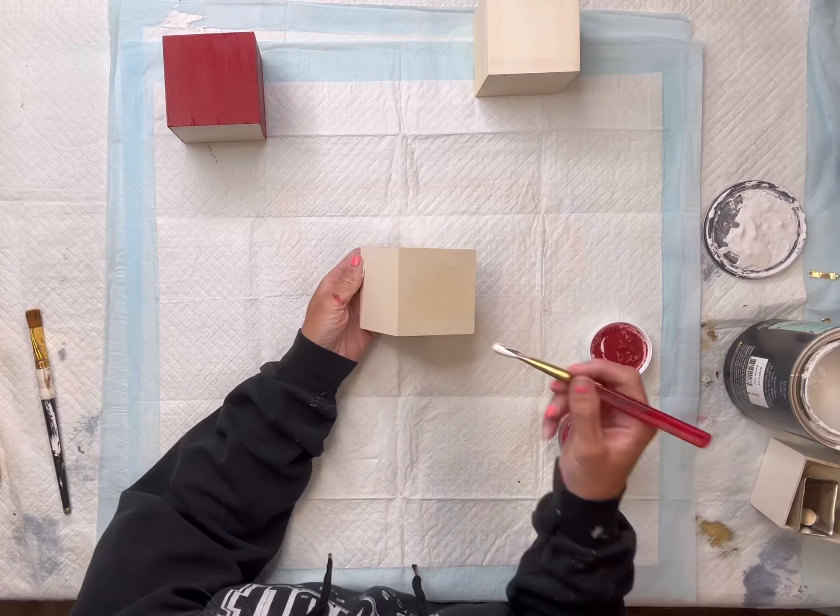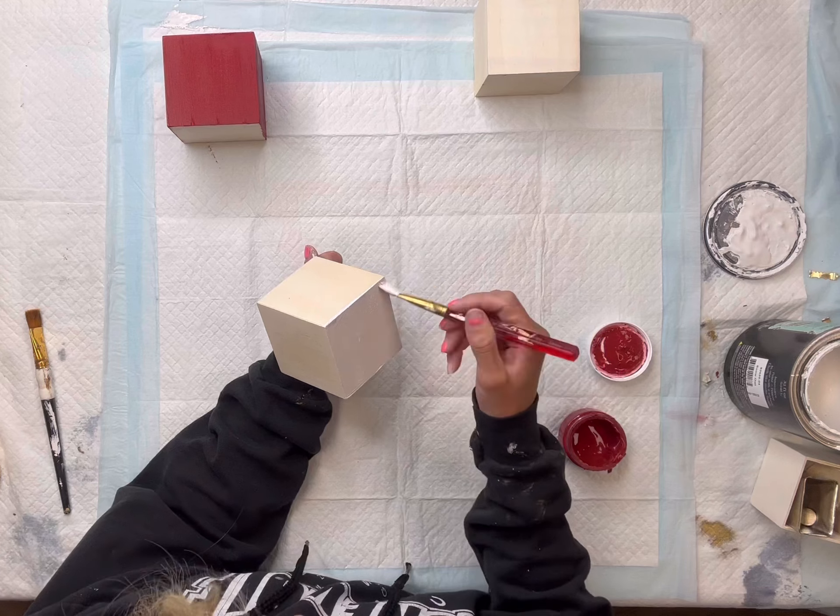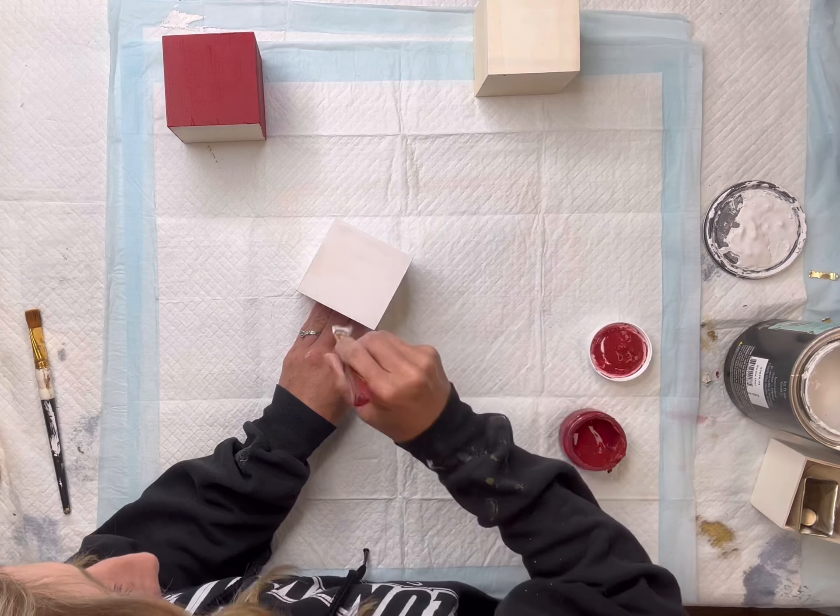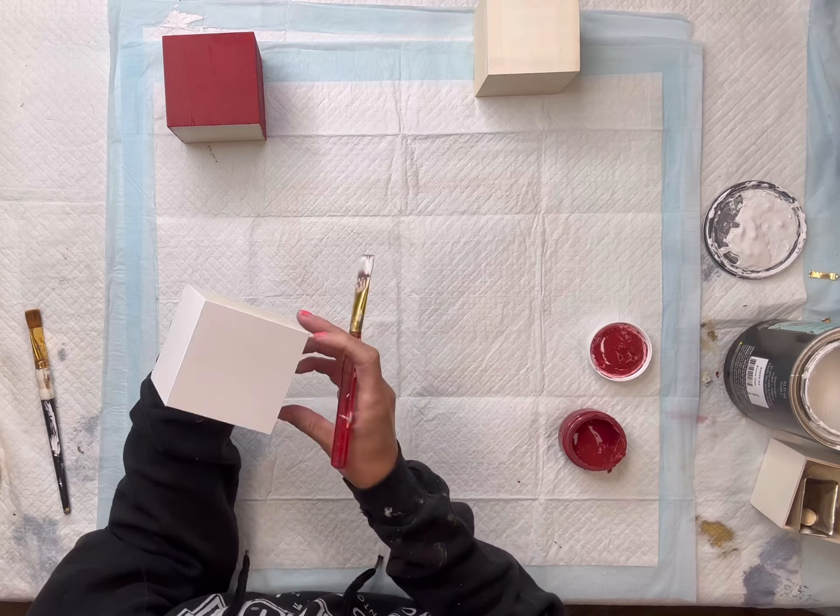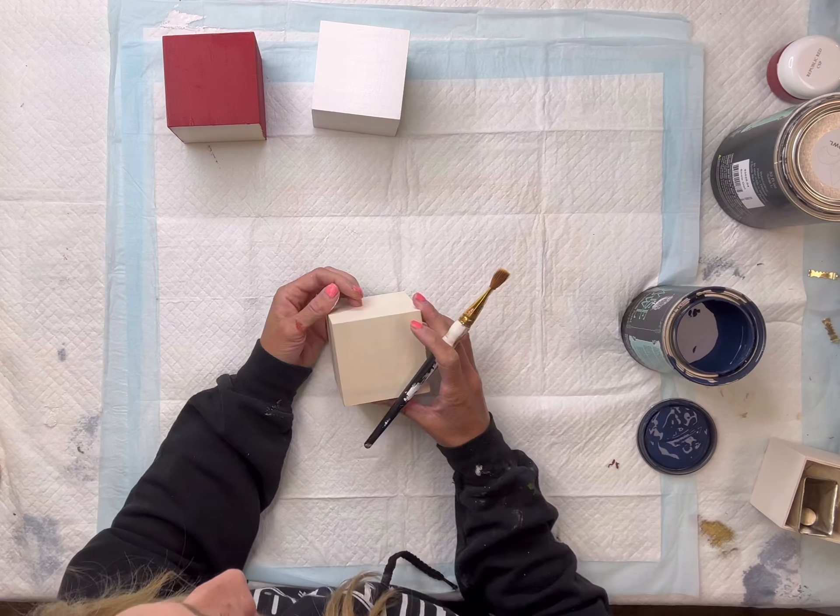I painted my first one using some Wise Owl Republic Red. My second one I painted using some Wise Owl Snow Owl. I'm pretty much going to paint all of the sides that are going to be exposed, leaving the back side, the opened end where I pulled the little drawer from.